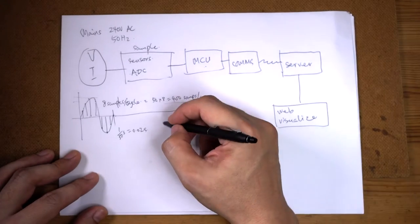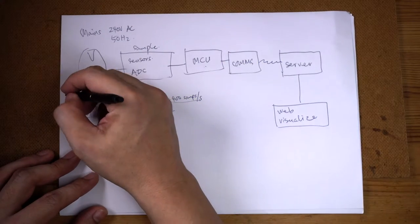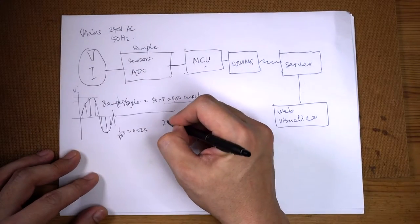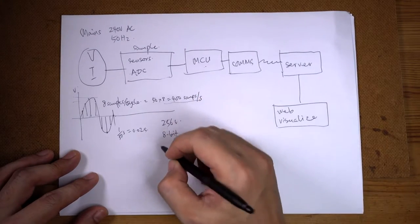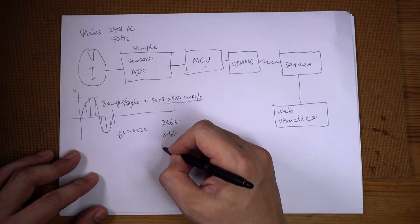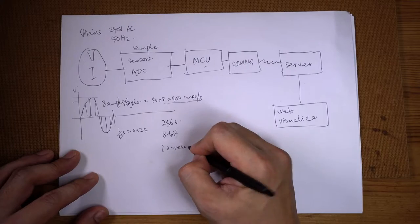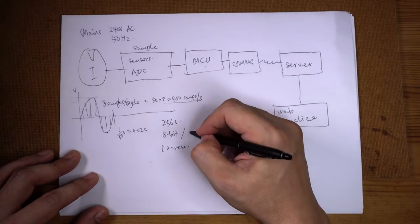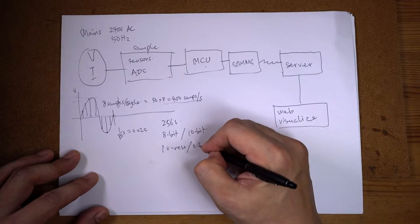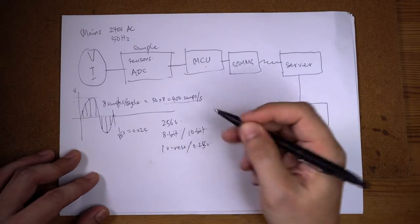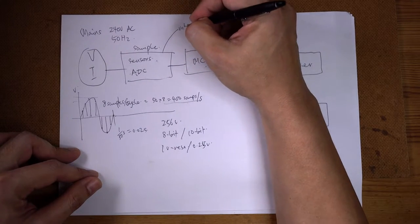The other important consideration is resolution. Suppose your full scale is 256 volts and you have an 8-bit ADC — that means you have 1 volt resolution. If you want a 10-bit ADC, resolution goes down to about 0.25 volts. So in selecting this thing you're going to have to decide on your sample rate and your resolution.